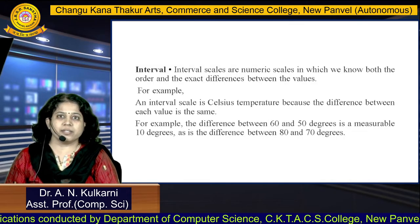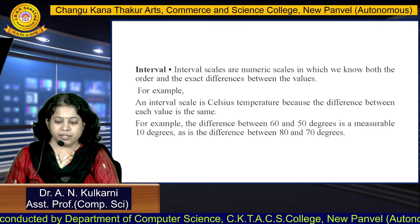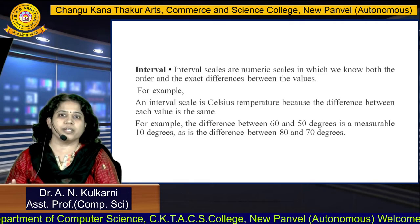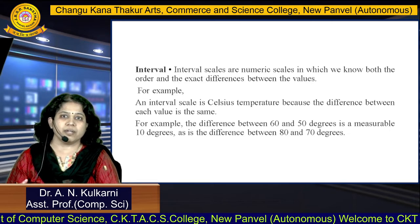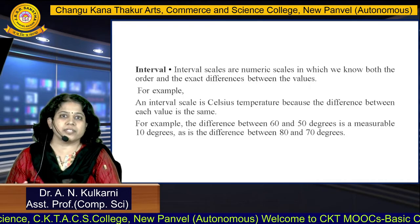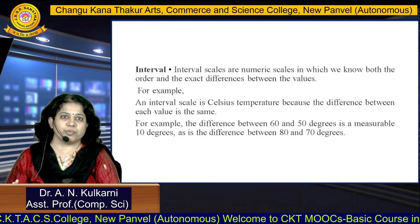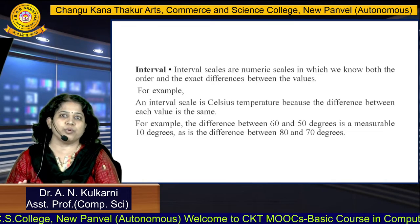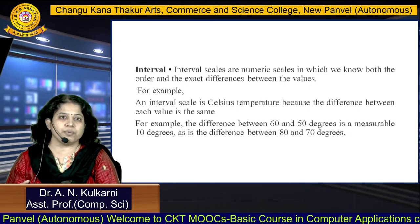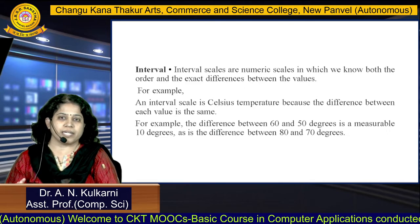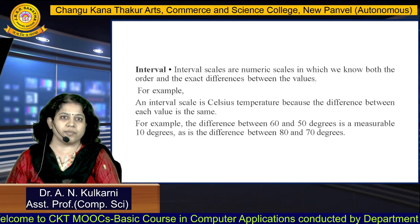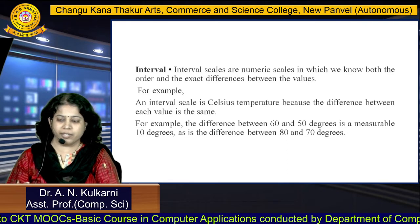Next is interval data. Interval scales are numerical scales in which we know both the order and the exact differences between values. For example, an interval scale is the Celsius temperature scale because the difference between each value is the same. The difference between 60 and 50 degrees is 10 degrees, which is the same as the difference between 80 and 70 degrees.